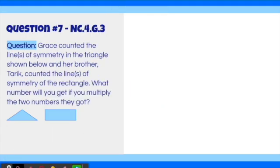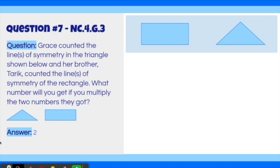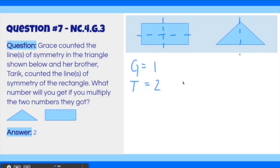Question number seven. Grace counted the lines of symmetry in the triangle shown below, and her brother Tariq counted the lines of symmetry of the rectangle. What number will you get if you multiply the two numbers they got? The answer is two. The rectangle has two lines of symmetry — one vertical and one horizontal. The triangle has one line of symmetry. Grace counted one, Tariq counted two. Multiplying two times one gives you two, which is the answer.